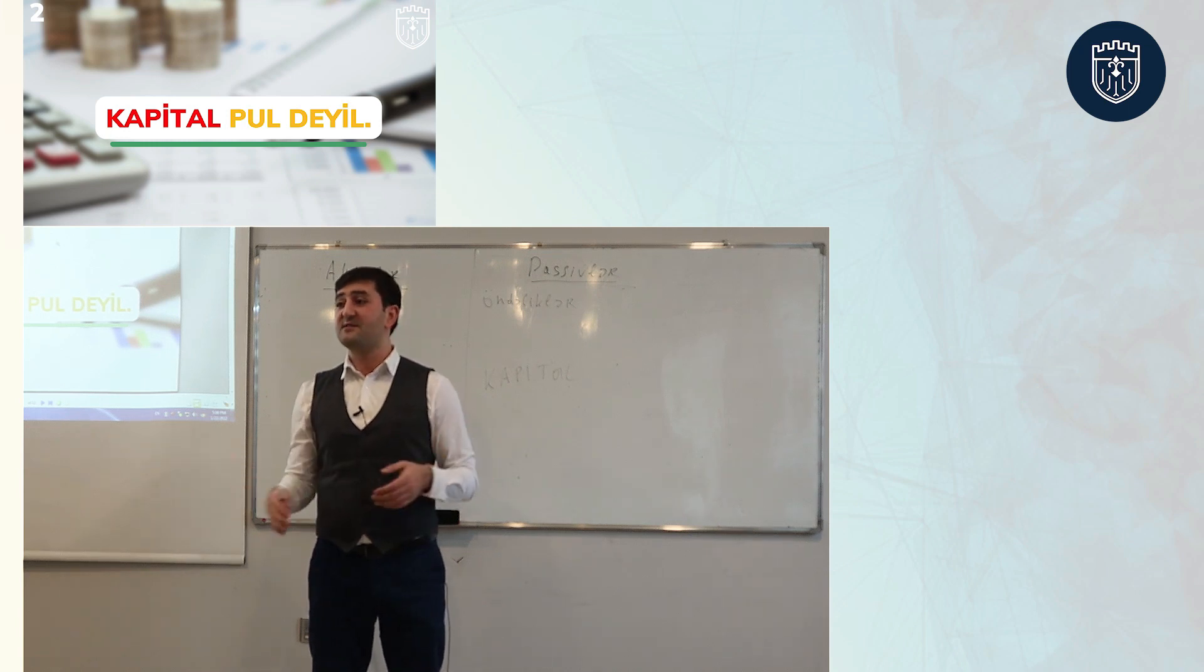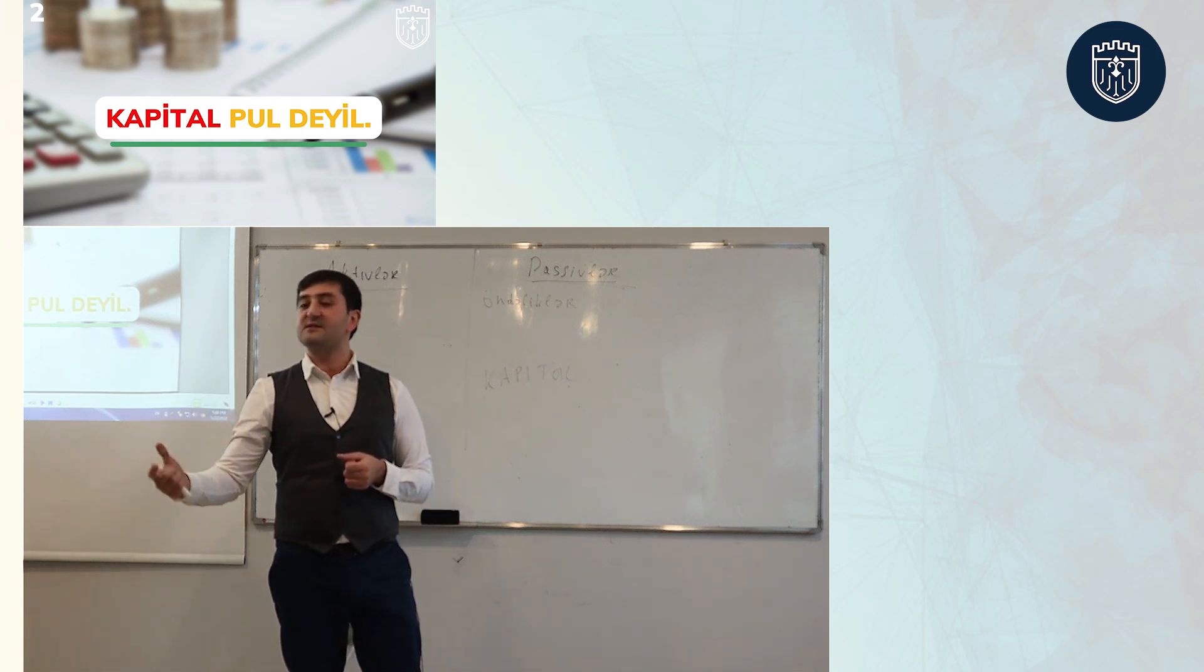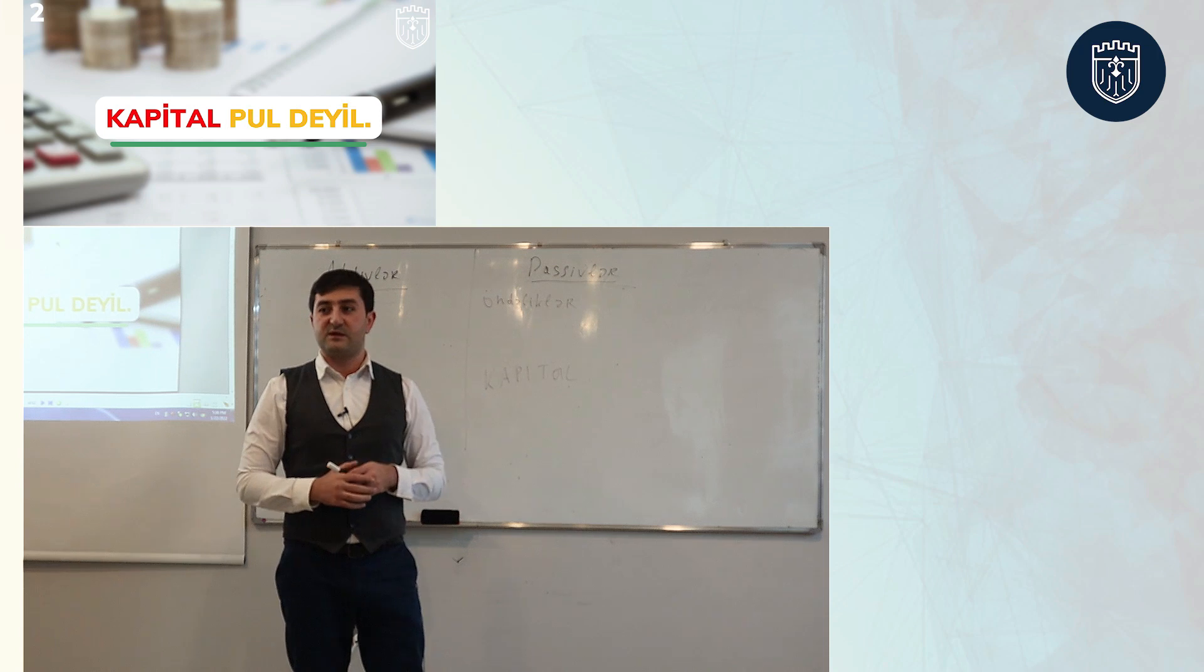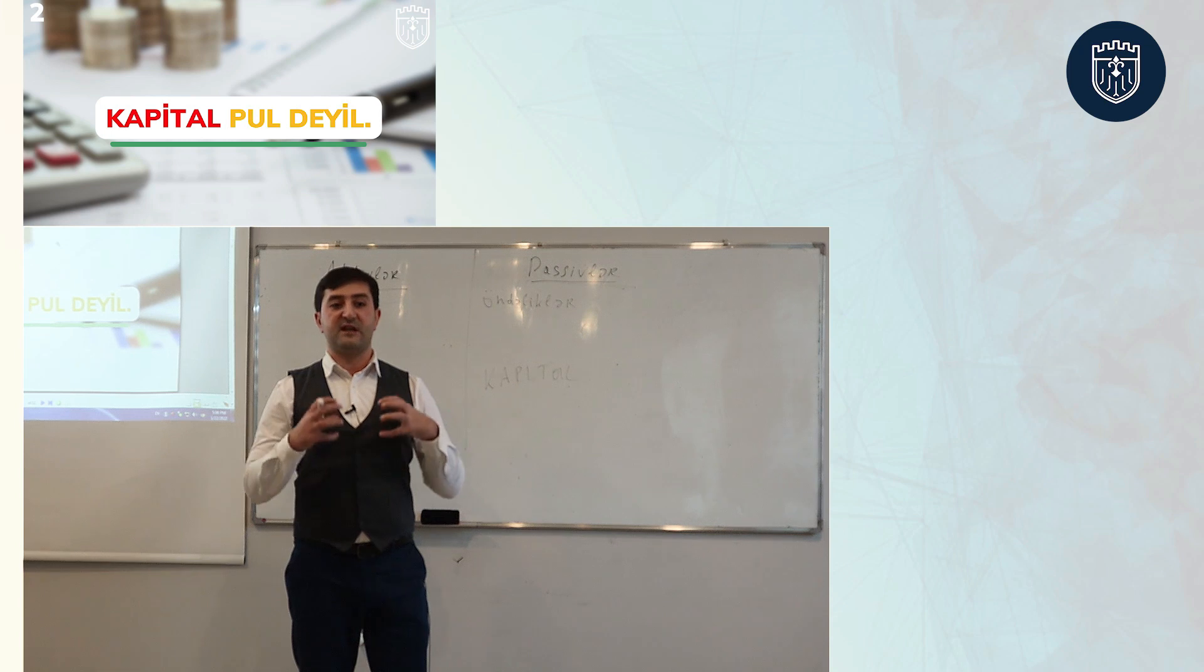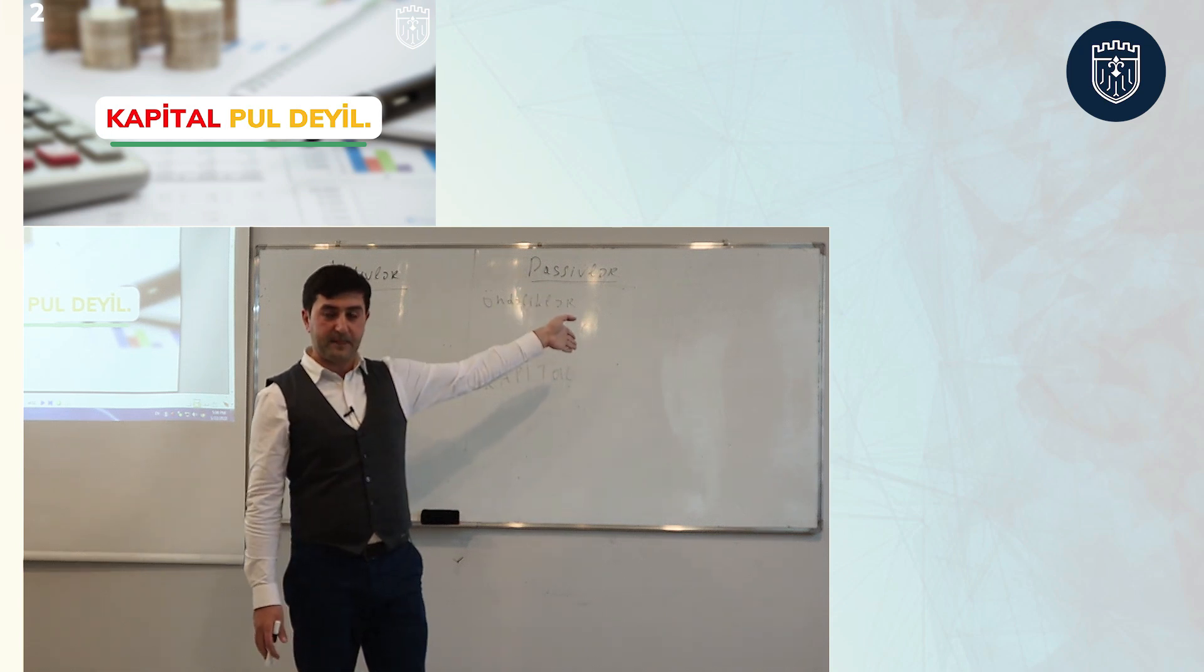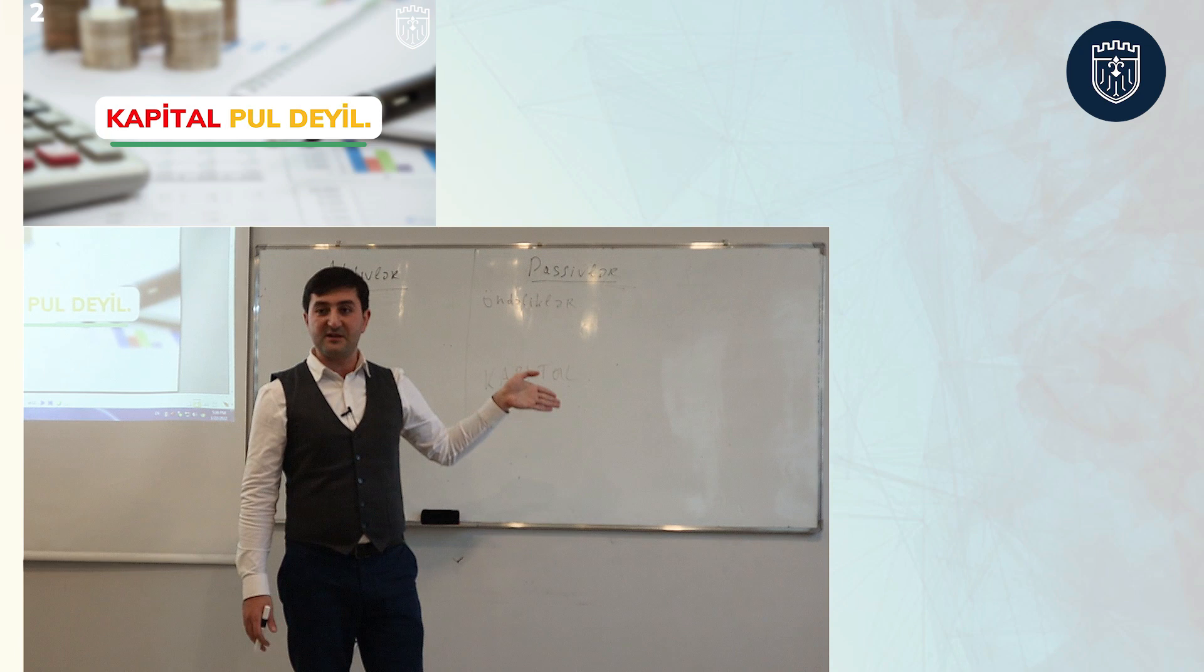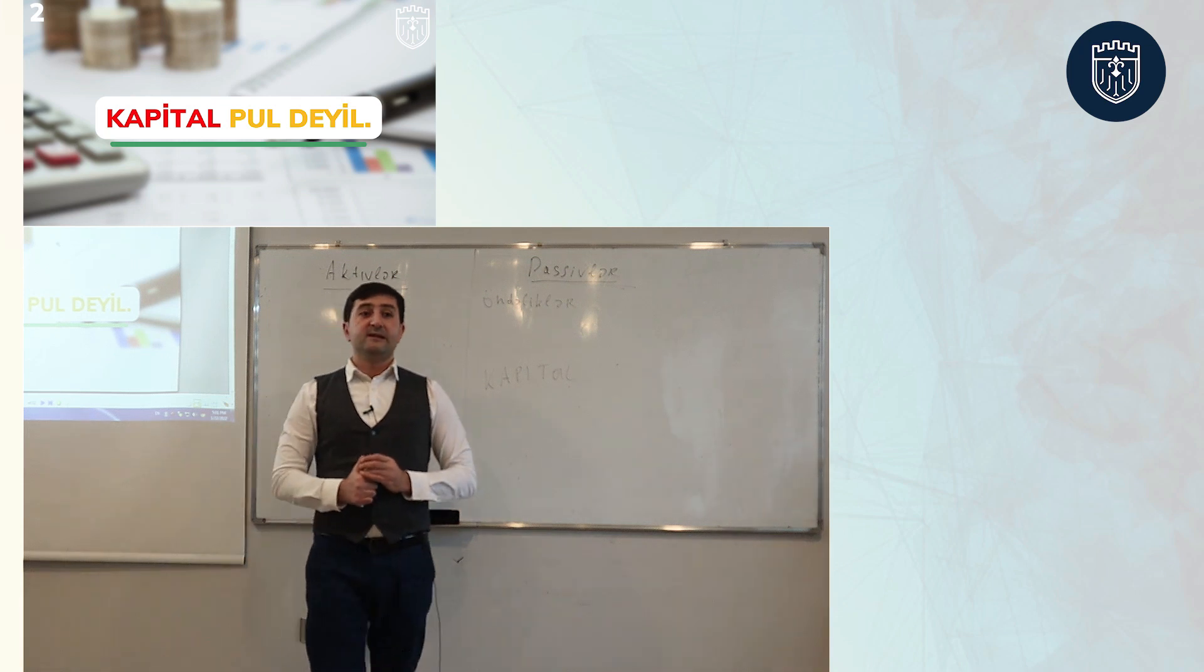Aktivlər yəni nə? Əlimizdə qabağımızda bir məqsəd var. Qabağımızdakı məqsədə çatmaq üçün əlimizdə olan vəsaitə aktiv deyilir. Balansın sağ tərəfində olan göstəricilər, yəni öhdəlik və kapital nədir? Həmən aktivlərə qarşı-qarşıya dayanan öhdəliklər və kapital.